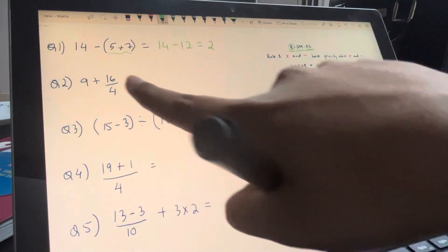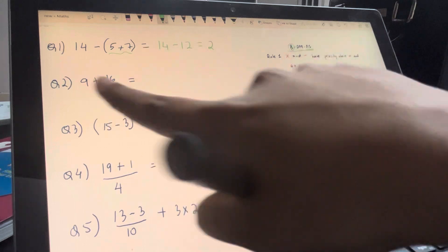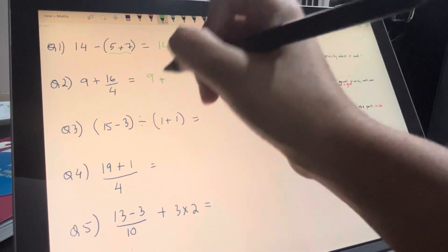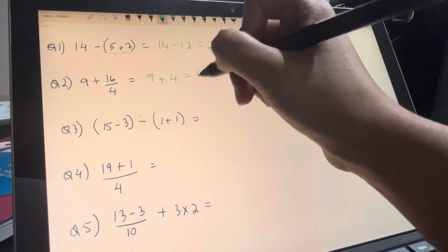Now for question 2, we know that division happens before addition, so this is going to be 9 plus, 16 divided by 4 is 4, that's 13.